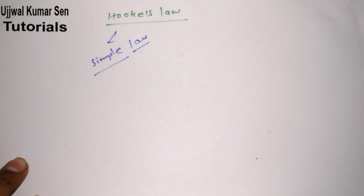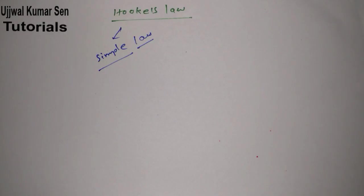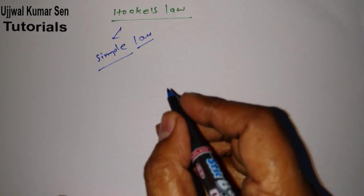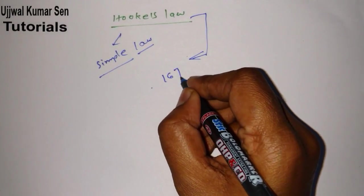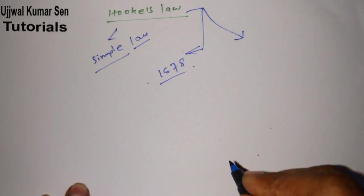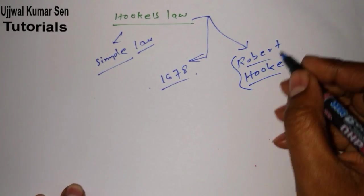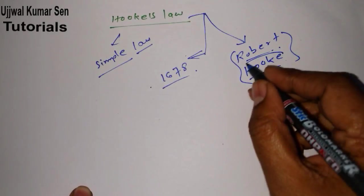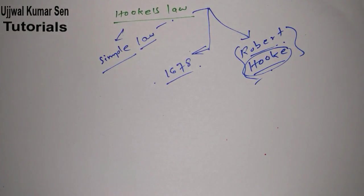I'm also going to share with you exactly where students make mistakes while writing or speaking the definition of this law. This law was provided in 1678, and the person who gave this law was Robert Hooke. Based on his surname, it is called Hooke's Law.